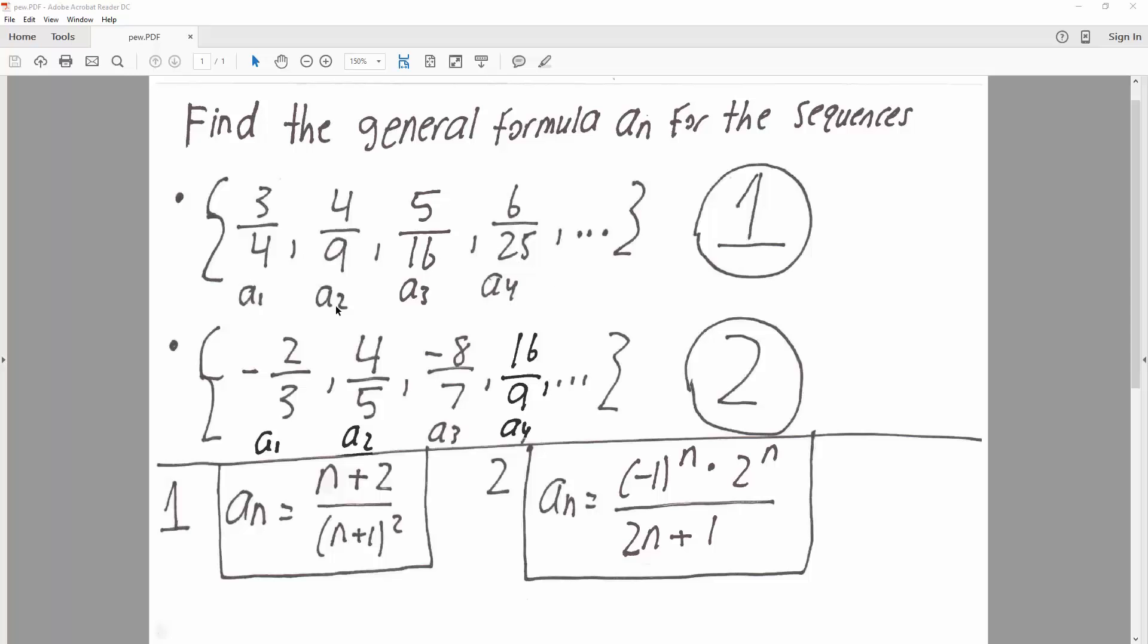So we know the first term is a1, second is a2, a3, and a4, and so on. And so what patterns do we see? Immediately the thing I see is that this is 2 squared, 3 squared, 4 squared, 5 squared. That might be important,